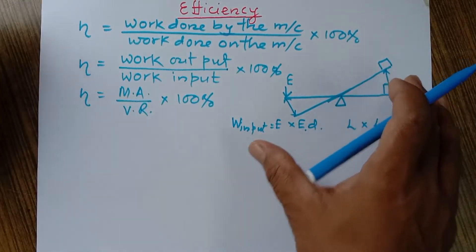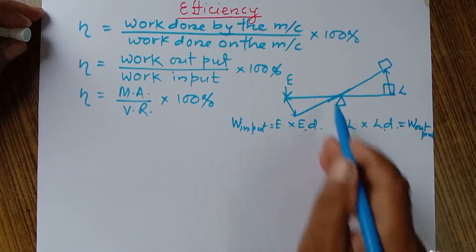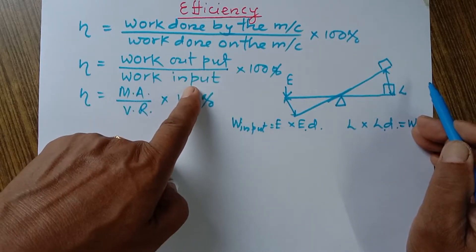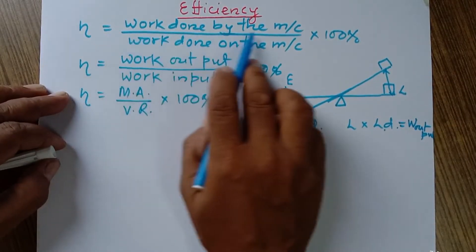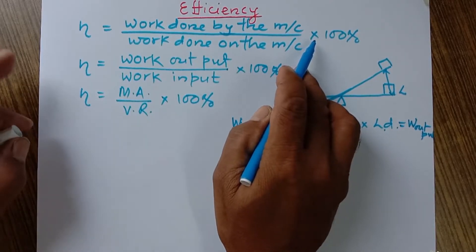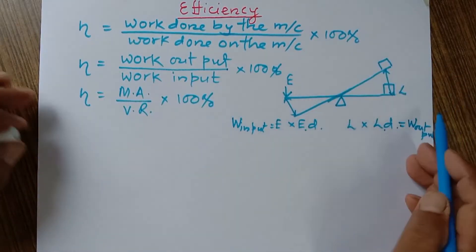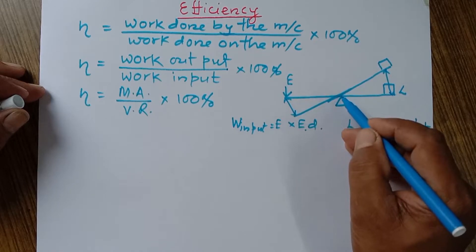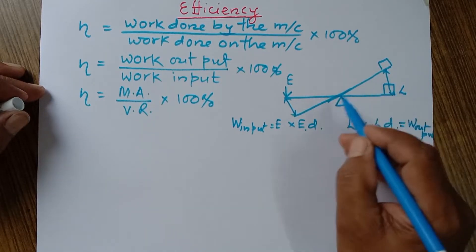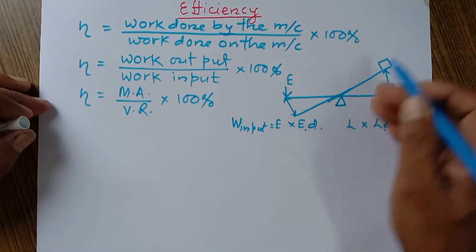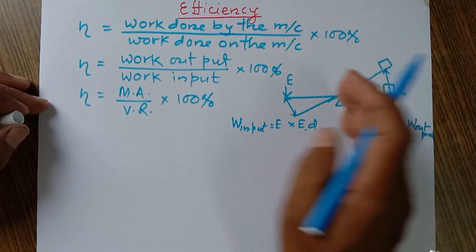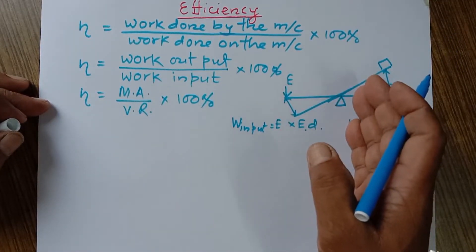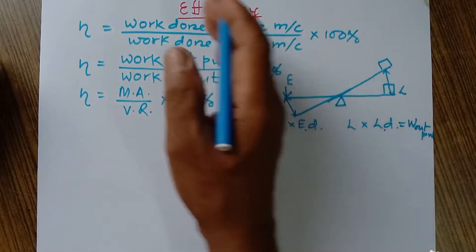So efficiency is the ratio of work output to work input, or equivalently the ratio of work done by the machine to the work done on the machine, expressed in percentage. These two quantities are not equal because certain effort is wasted due to friction. Because of friction, output work is always less and input work is always more — that's why the machine does less work than we put in, and this is represented by efficiency.